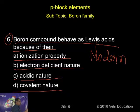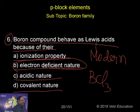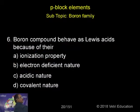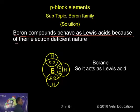All Lewis acids are electron-deficient in nature. A simple example is boron trichloride. If you take boron trichloride or borane, the central atom only has three bond pairs — that is six electrons total — so it is electron-deficient. You can see boron compounds behave as Lewis acid because of their electron-deficient nature.